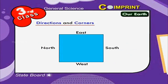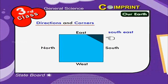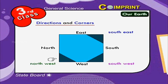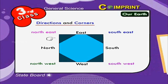This picture shows you clearly about the remaining directions. The South East is located between South and East. The South West is located between South and West. The North West is located between North and West. The North East is located between North and East.